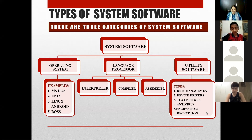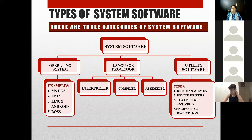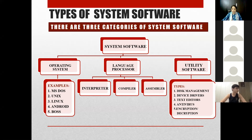Assembly language was the second generation language. After machine language, assembly language was developed. A few codes called mnemonic codes were developed to give an easier language for human programmers, so they could give instructions using codes instead of binary digits of zeros and ones. When you use assembly language, we use the assembler to convert assembly language into machine language.